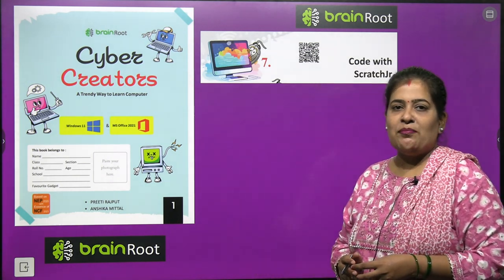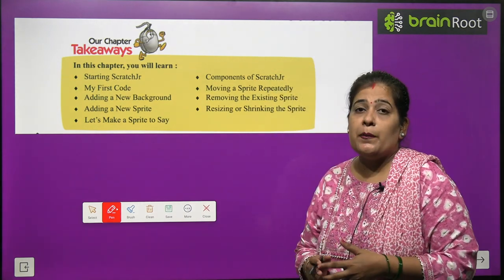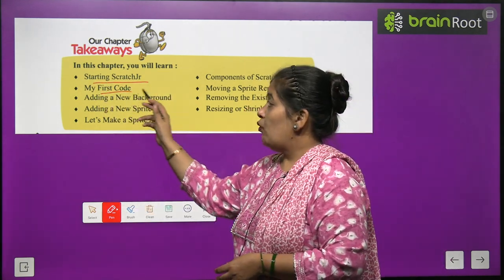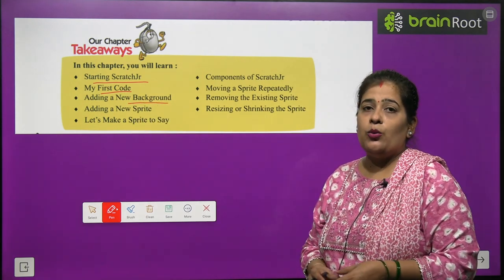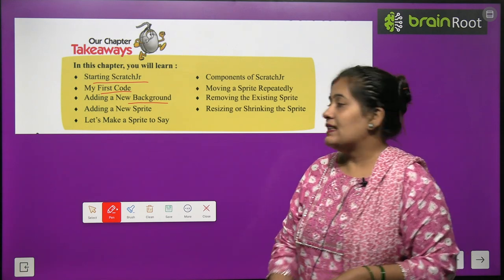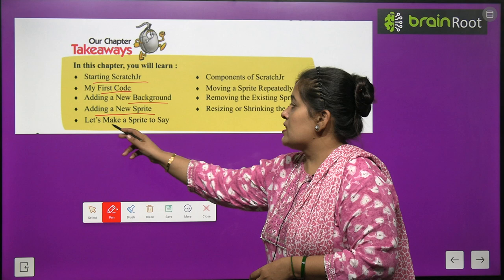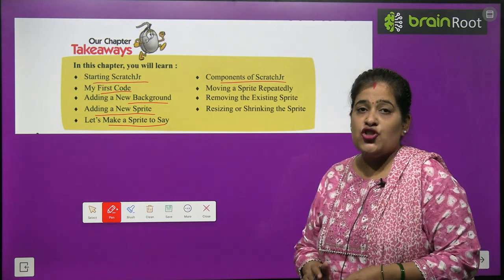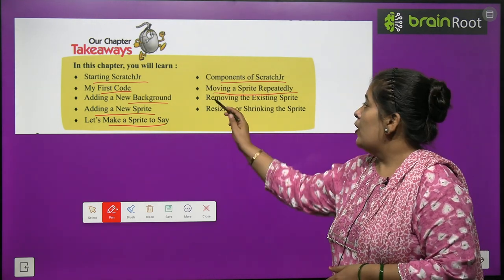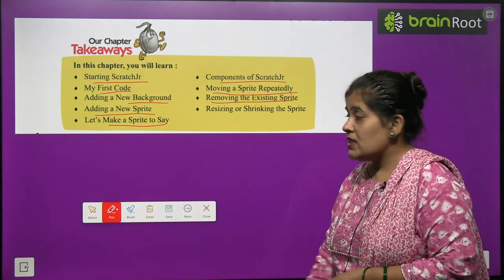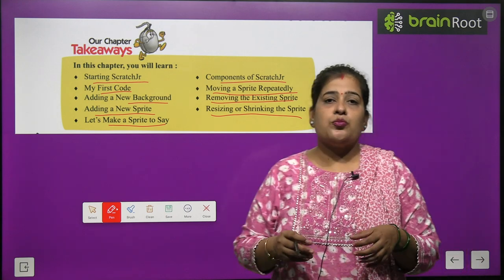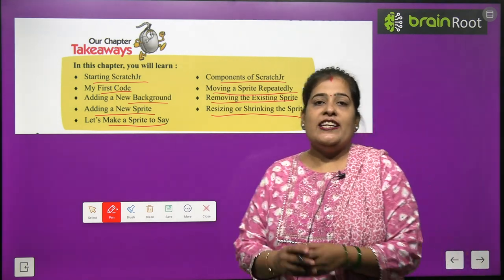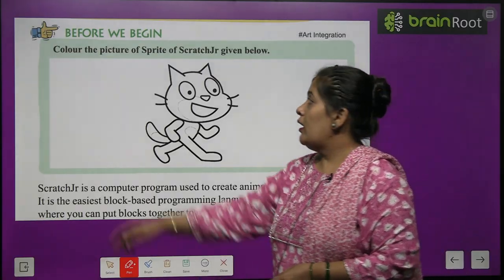So let's start our chapter. In this chapter you will learn: Starting Scratch Junior, My first code, Adding a new background — how we add a new background — Adding a new sprite, Let's make a sprite to save, Components of Scratch Junior, Moving a sprite rapidly, Removing the existing sprite, and Resizing or shrinking the sprite. We will study all these things well in this chapter. So let's start our chapter.